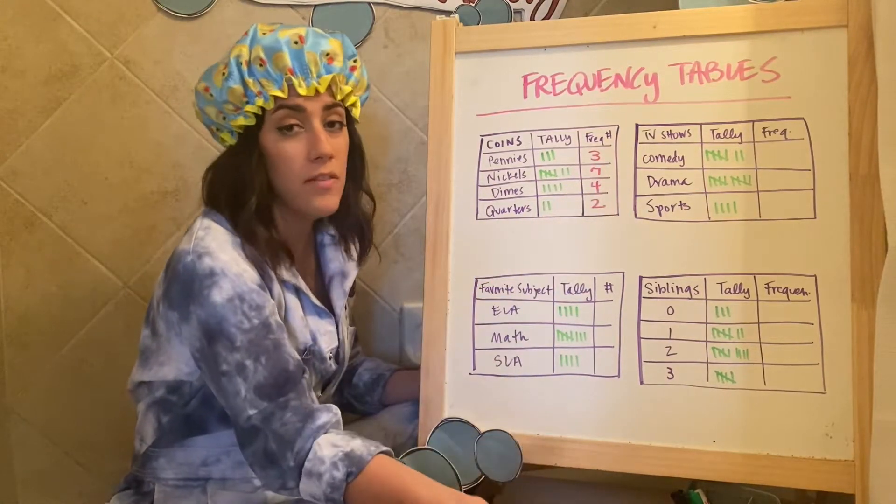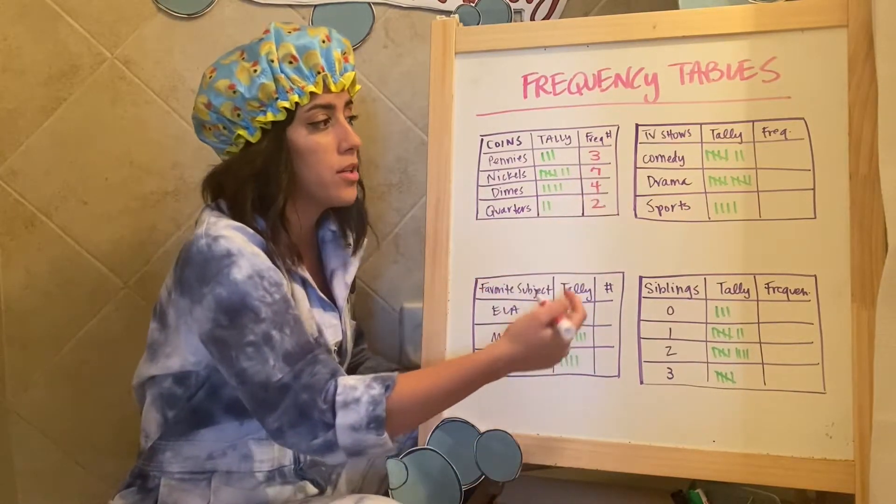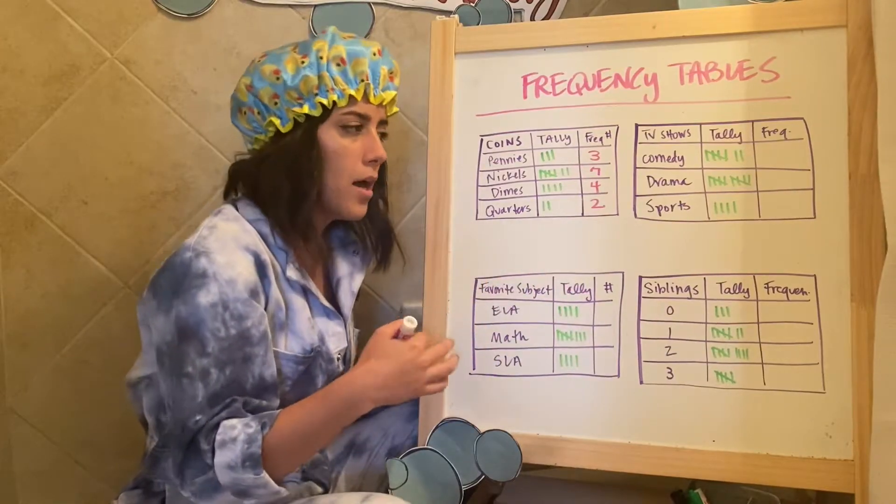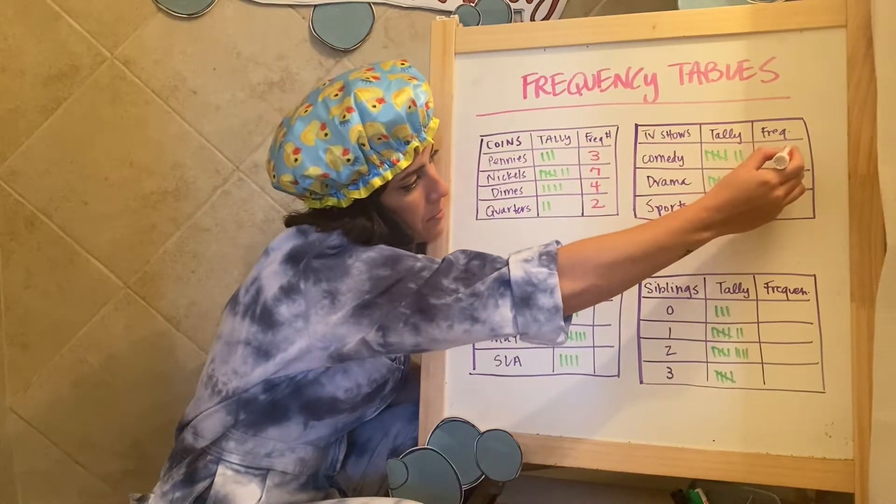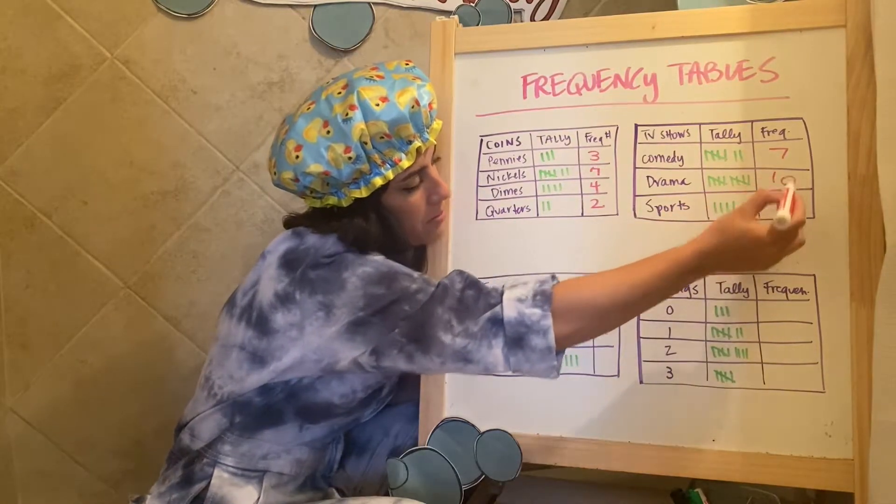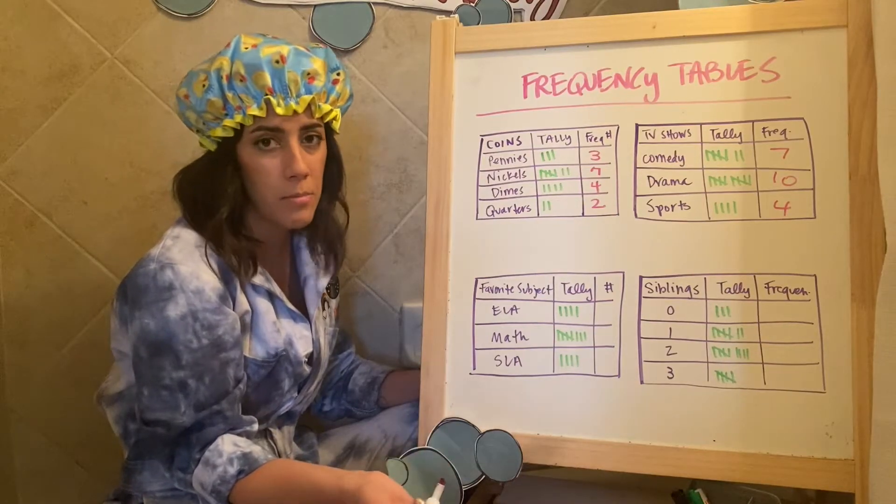So I have figured out the frequency for each time these were mentioned or said, or they had. Let's see favorite TV show. So someone surveyed, is your favorite type of TV show, comedy, drama, or sports? And people said comedy or drama. They picked one. So there were seven people that picked comedy, 10 people that picked drama and four people that picked sports just by counting the tallies. Simple.